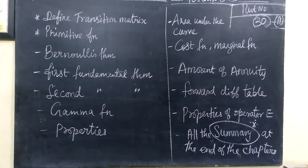That is a question. Then area under the curve, different types, and all types that will go through. Then cost function, marginal function, that will define, that formula you are writing. Then amount of annuity, then forward difference table.